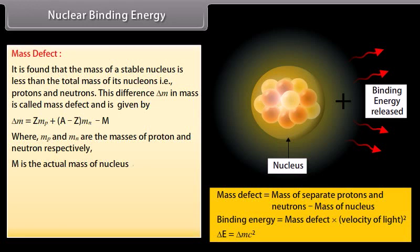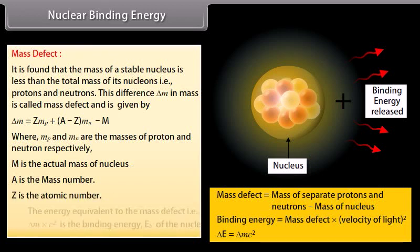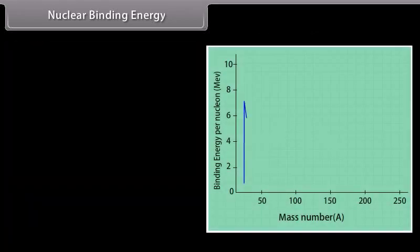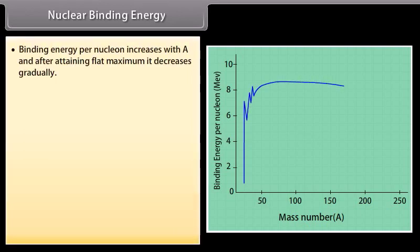M is the actual mass of nucleus, A is the mass number, Z is the atomic number. The energy equivalent to the mass defect, that is delta M into C square, is the binding energy EB of the nucleus. From the graph we note that...